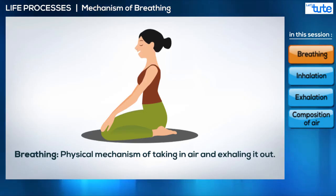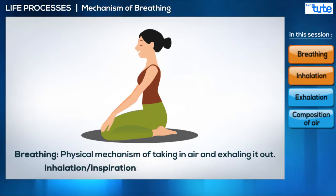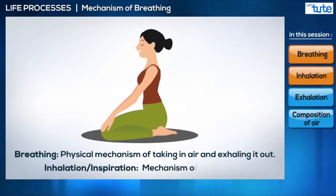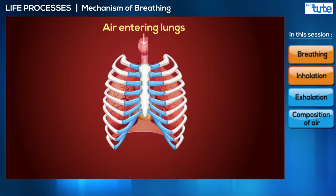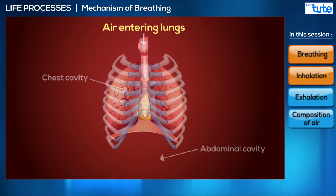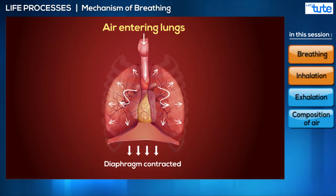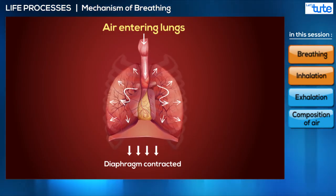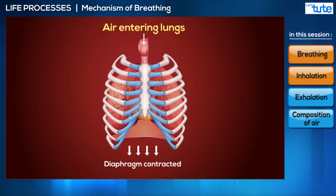The first step is inhalation, or inspiration. This is the physical mechanism of taking in air. The diaphragm is a dome-shaped muscular tissue that separates the chest cavity and the abdominal cavity. During inhalation, the diaphragm flattens, making more space for the lungs in the chest cavity. The ribs further move upwards and outwards.